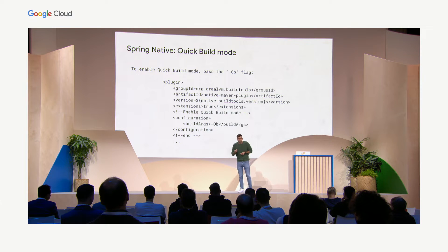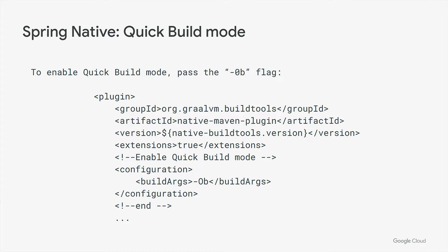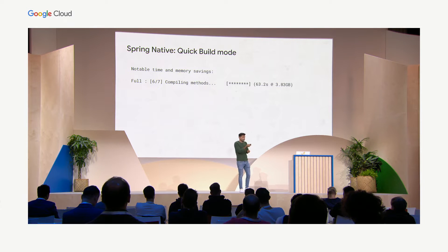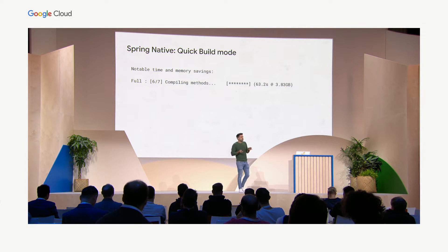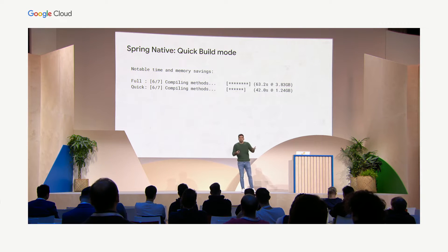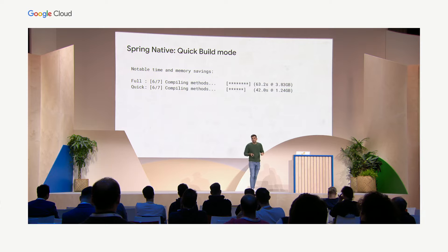Lastly, there's native quick build mode. If you've ever built a Java native application without a powerful computer, you know the pain — your fans will start flying out of the room. With native quick build mode, you pass the `-Ob` flag, and compilation time is significantly reduced: a normal compilation takes 63 seconds and 4 gigabytes of memory, while quick build mode takes 42 seconds and less than half the memory. This is pretty good, especially if you're building hundreds of containers per day.